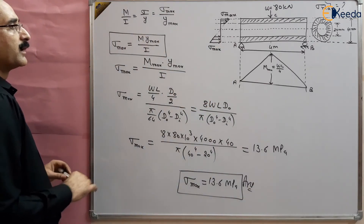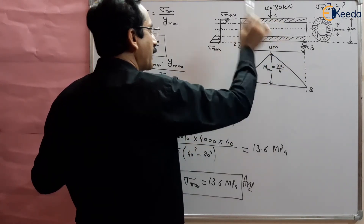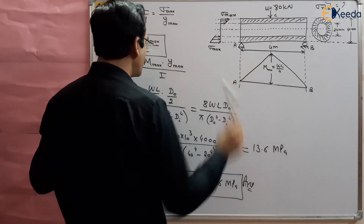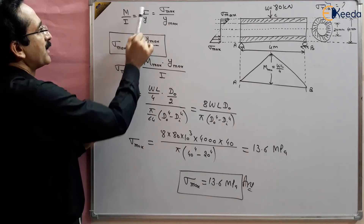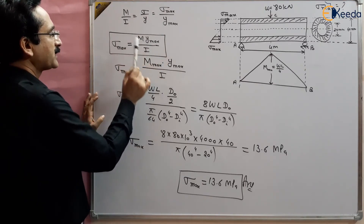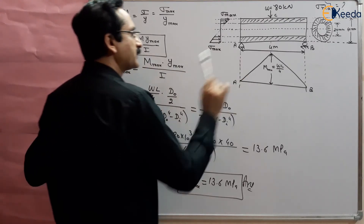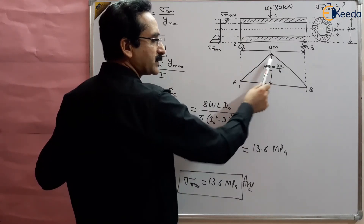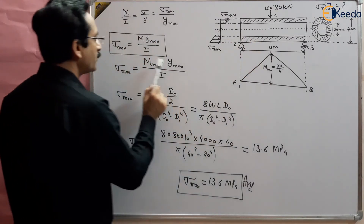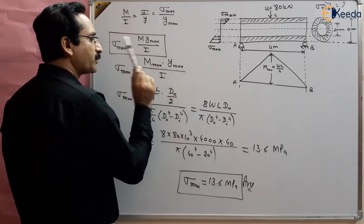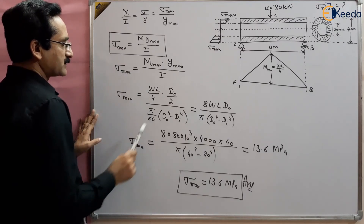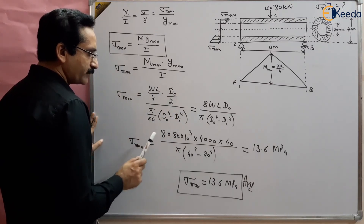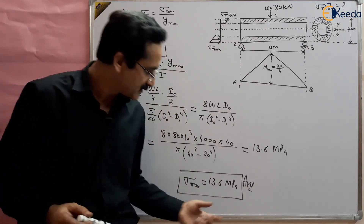To summarize: we have a simply supported beam loaded with an 80 Newton point load at the center. The bending moment diagram shows maximum bending moment at the center given by WL/4. Using the bending formula M/I = σ/y, sigma_max equals M_max × y_max / I — where M_max is at the center, y_max is the outer fiber radius, and I is the moment of inertia. The maximum bending stress is 13.6 MPa.